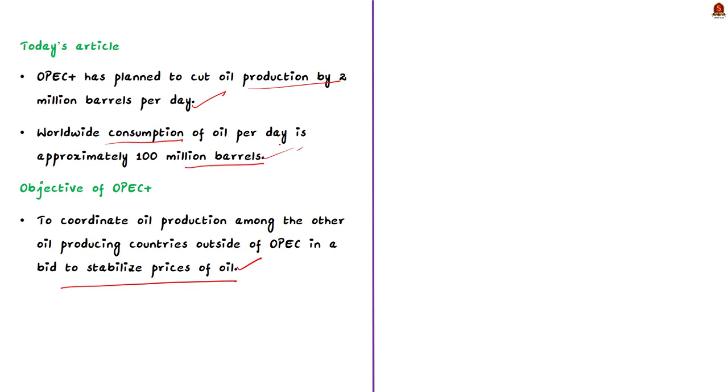This cut in oil production is a significant one. As a cartel, the OPEC plus member countries collectively agree on how much oil to produce, which directly impacts the ready supply of crude oil in the global market at any given time. OPEC plus subsequently exerts considerable influence over the global market price of oil. Also know that USA has called this decision to cut oil production as a short-sighted one.